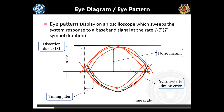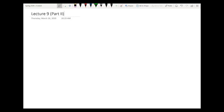It is basically a display or an oscilloscope display which sweeps the system response to a baseband signal at the rate of 1 over T hertz, where T is the symbol duration. The main theme is that you plot the received symbols in the form of pulses for the pulse duration of capital T on the same plot, and you observe what is happening with these pulses and analyze the performance of the system by analyzing different aspects and features of the eye diagram.